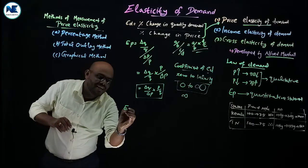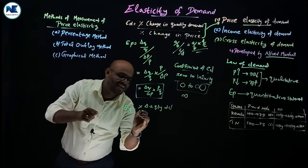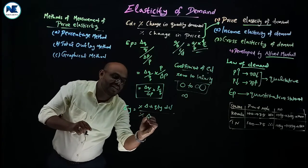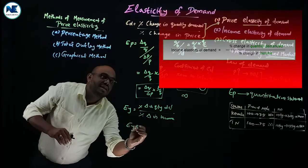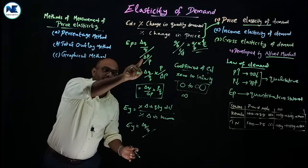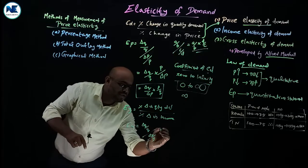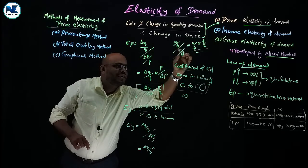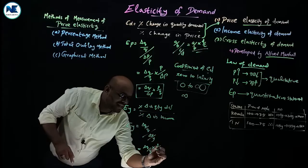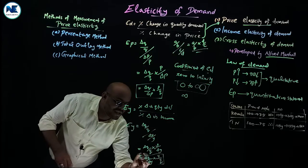Income elasticity of demand (EY) uses the same numerator — percentage change in quantity demanded — but instead of percentage change in price, we use percentage change in the consumer's income. The formula is: EY = (ΔQ/Q) ÷ (ΔY/Y), where ΔY is the change in income and Y is the initial income. Simplified, this becomes: ΔQ/ΔY × Y/Q. This is the formula for income elasticity of demand.